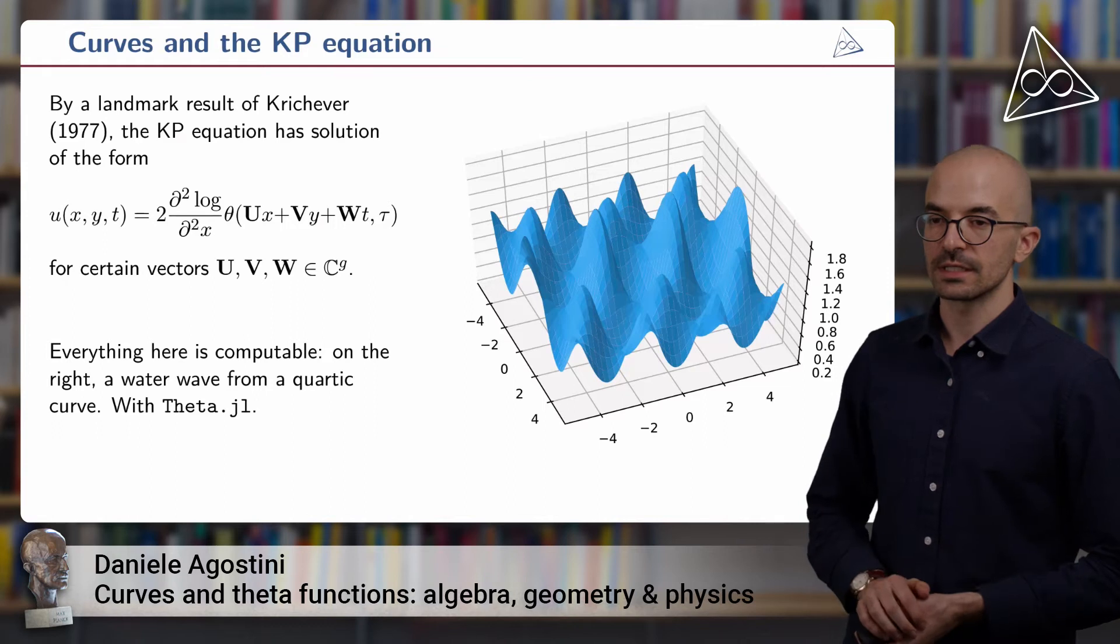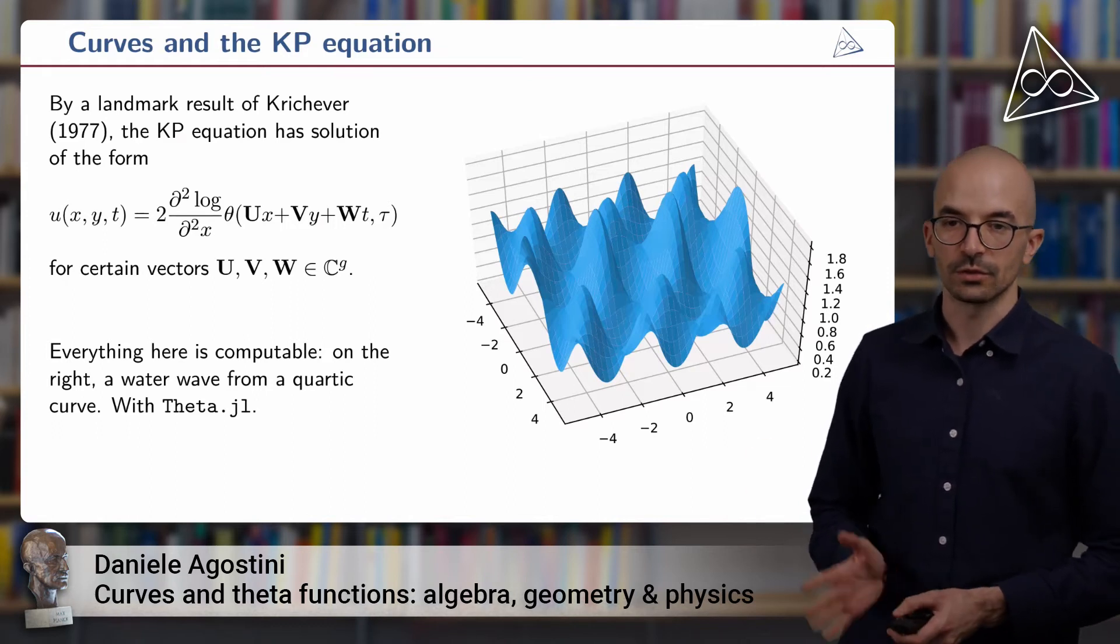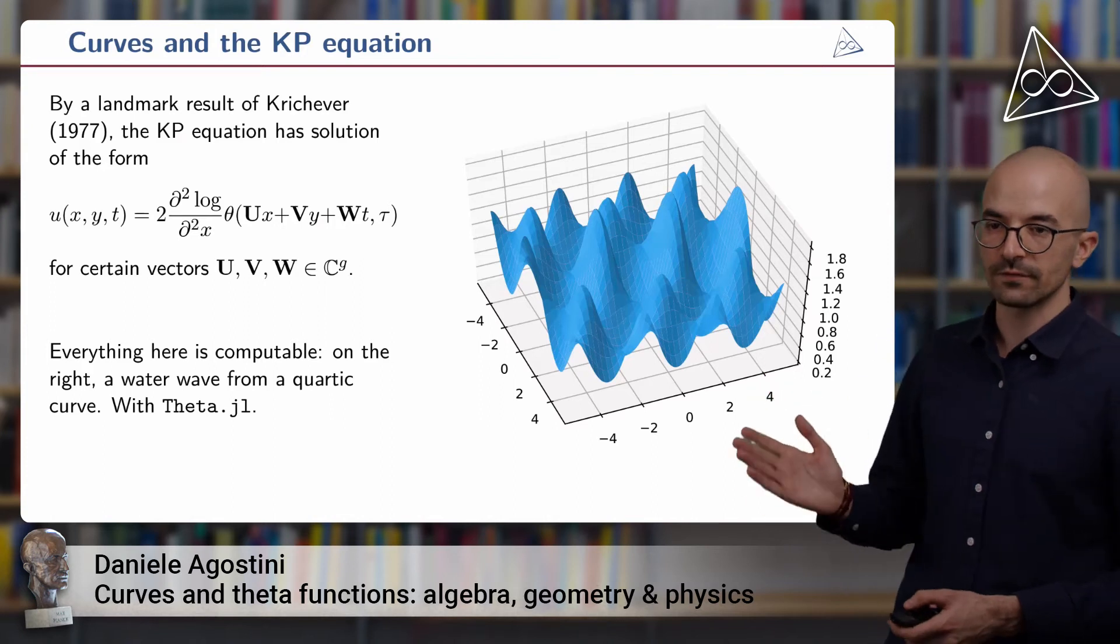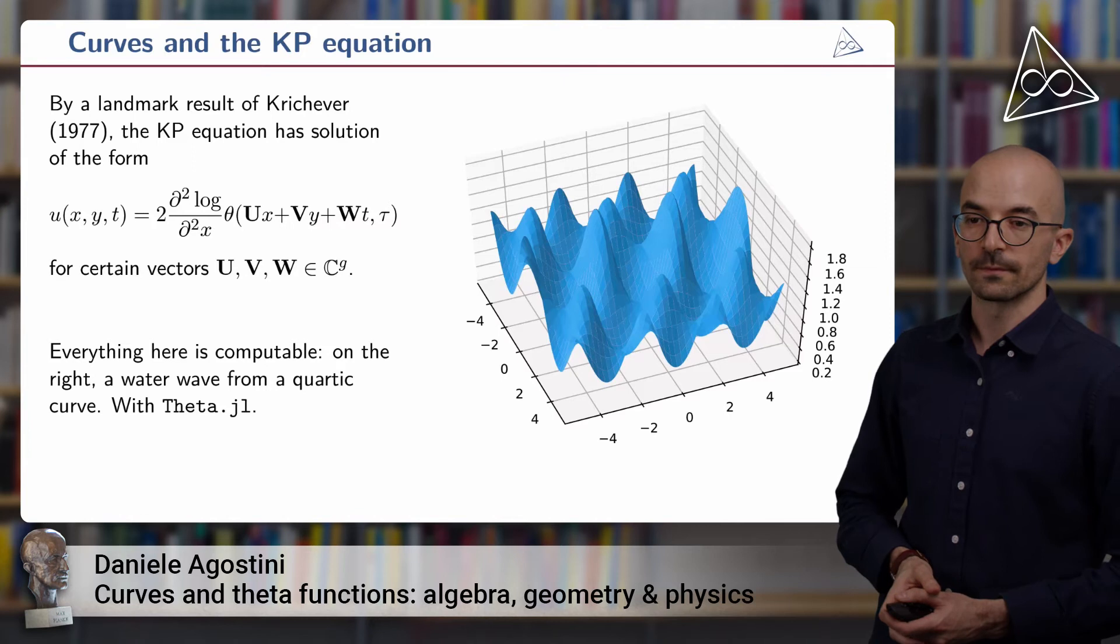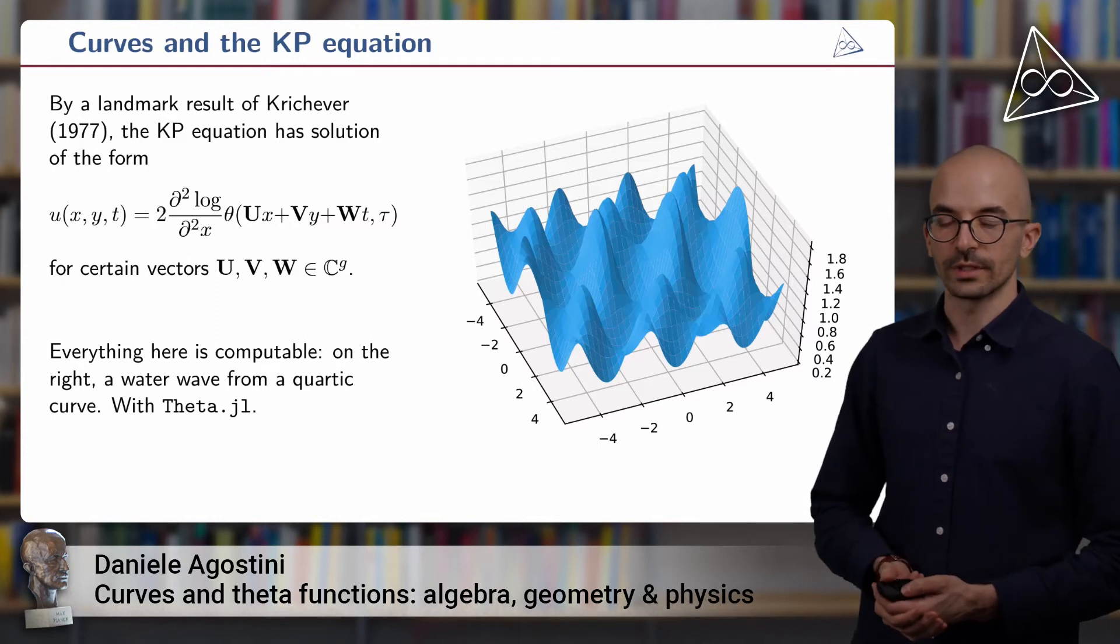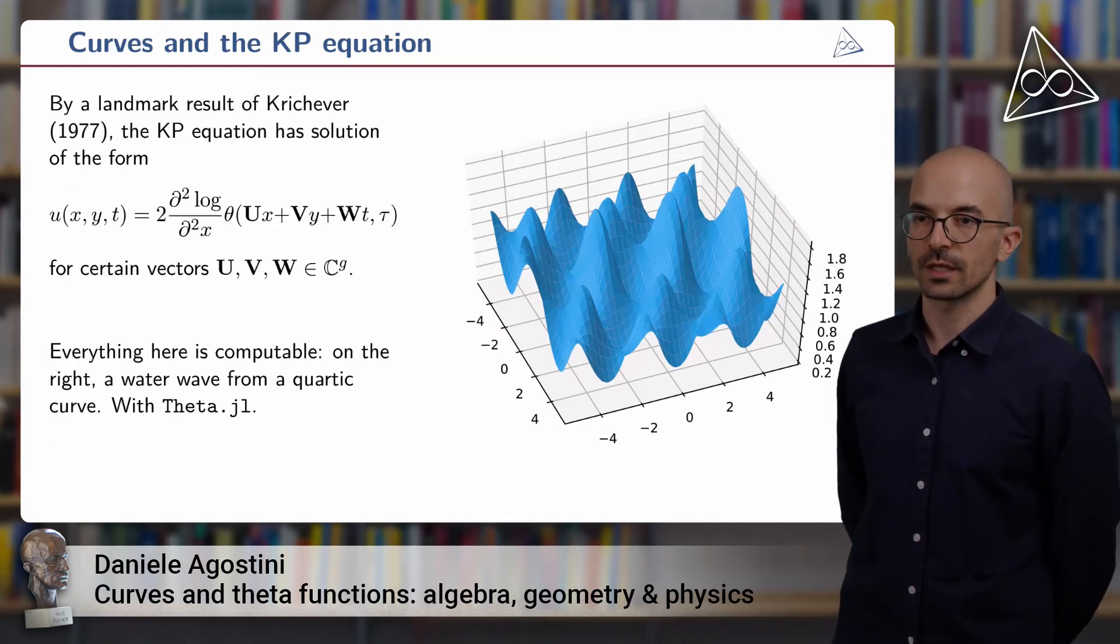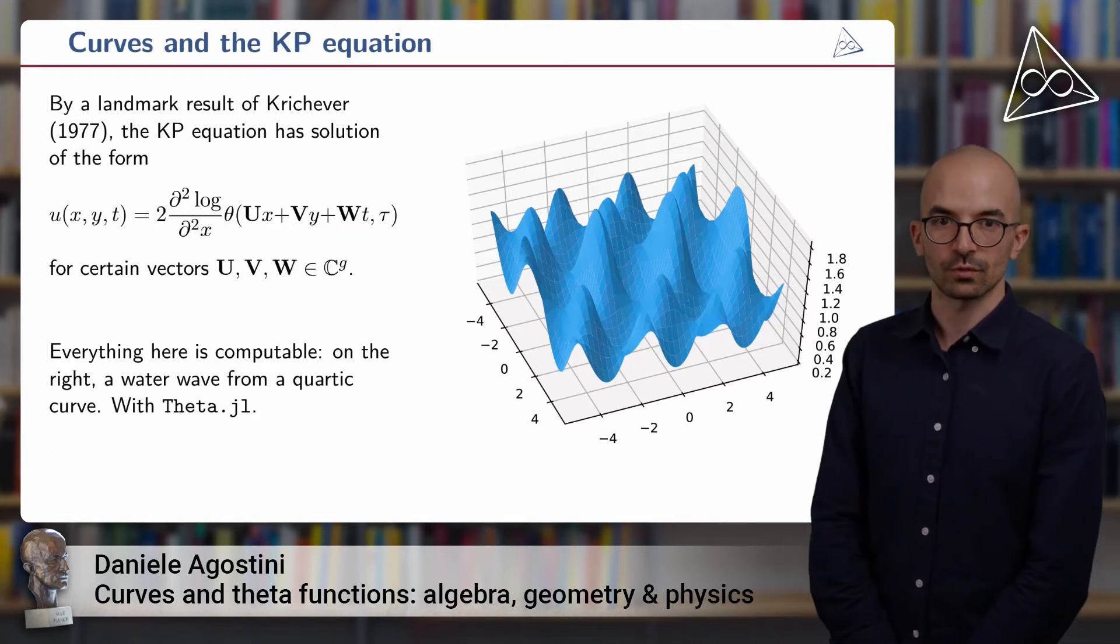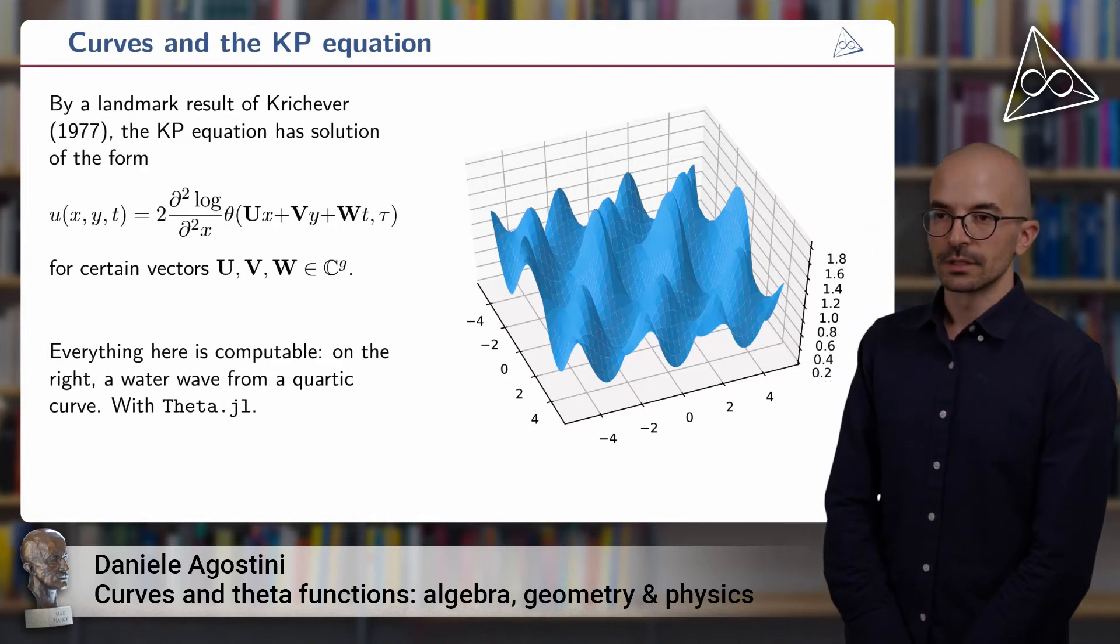I would like to stress that everything here is very concrete and computable. For example, here you can see an example of a water wave that comes from a smooth, plane, quartic curve. In particular, this is the Trott curve that we are going to see later. And we computed this example with our software package theta.jl. It was a bit of introduction to the subject of the KP equation. Now, let us come to some of the results that we have obtained.